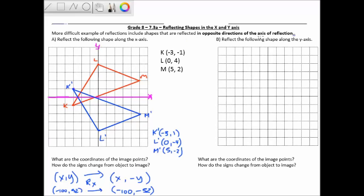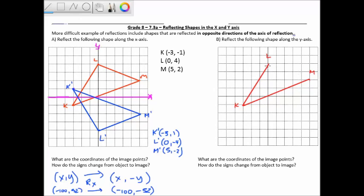Now let's see what happens if we reflect across the y-axis. We start with our original points again: K at negative 3, negative 1; L at 0, 4; and M at 5, 2. Let me connect these to make a triangle. Instead of reflecting across the x-axis, I'm now going to reflect across the y-axis, which is the vertical axis.